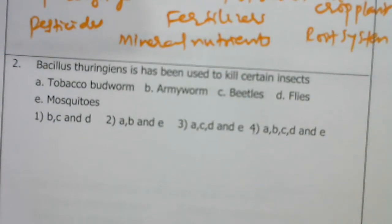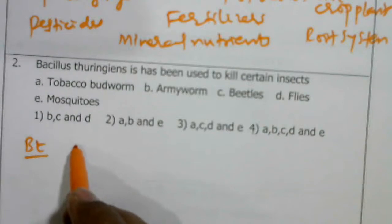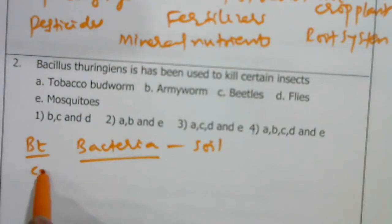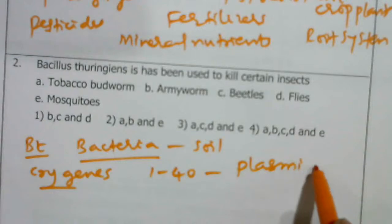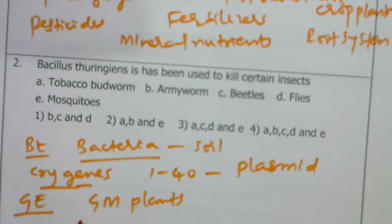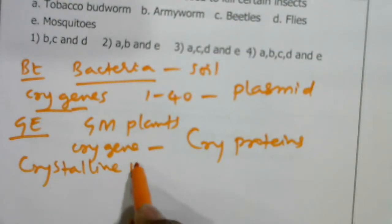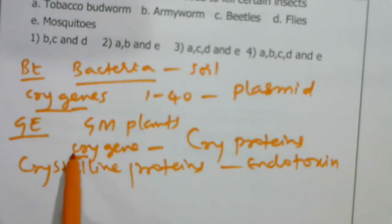Next: Bacillus thuringiensis, or Bt, is a rod-shaped, gram-negative bacterium that lives in the soil. It has a group of genes called cry genes — around 1 to 40 different cry genes found in the plasmid. Using genetic engineering, we have produced genetically modified plants using cry genes. Cry genes code for cry proteins, which are crystalline proteins — endotoxins produced by the cry genes.